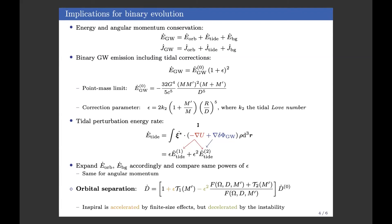To outline the basic idea, we use simple energy and angular momentum conservation arguments and calculate the correction to gravitational wave emission due to the tide. An epsilon parameter accounts for these corrections; the zeroth order term is simply the point-mass limit. This epsilon parameter, which accounts for tidal corrections, involves the tidal Love number — a parameter that tells you how much your star can be deformed when placed inside the tidal field of a companion, depending on the equation of state.